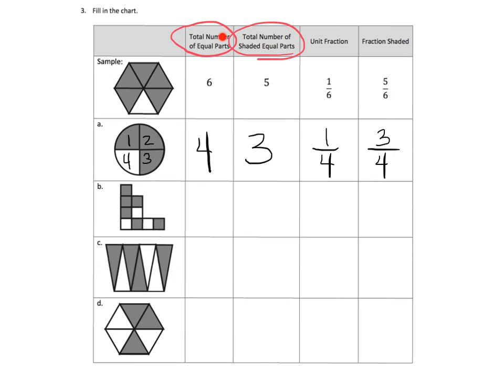All right, so first off, what's the total number of equal parts? One, two, three, four, five, six, seven. All right, what's the total number of shaded equal parts? And we've got one, two, three, four. So it's going to be four.